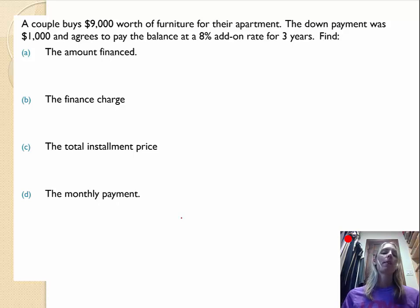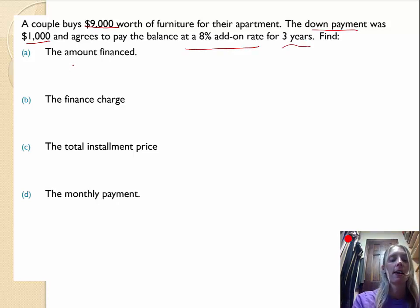Okay, here's the second and last example. I suggest you pause the video. See if you can come up with the answers on your own and then you can check back with me. Alright, so a couple buys $9,000 worth of furniture for their apartment. And the down payment was $1,000. And they agreed to pay back at 8% add-on for 3 years. So we want to find the same thing. So first the amount financed. That's going to be the total amount, $9,000, minus the down payment, $1,000. So they're financing $8,000.